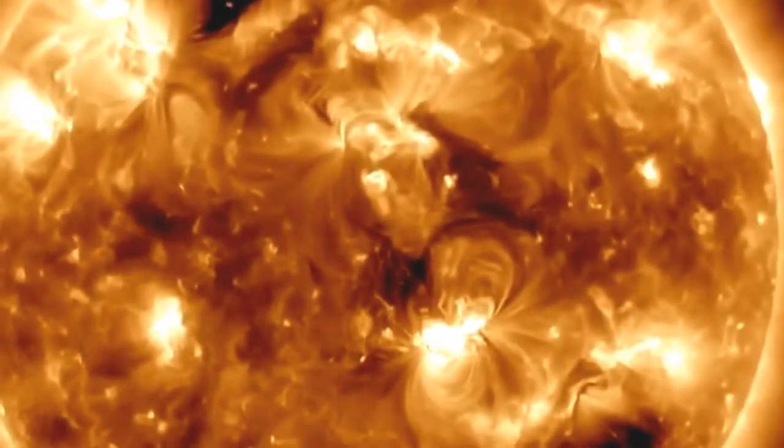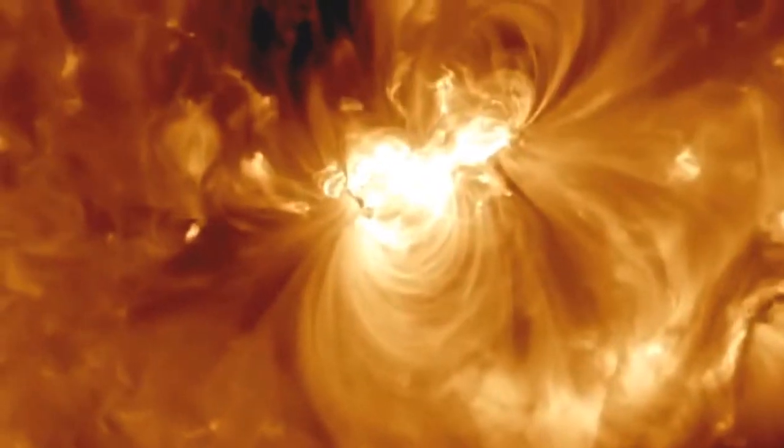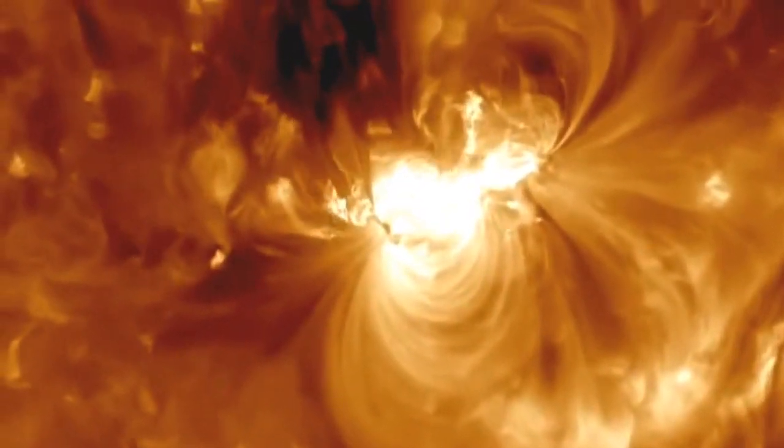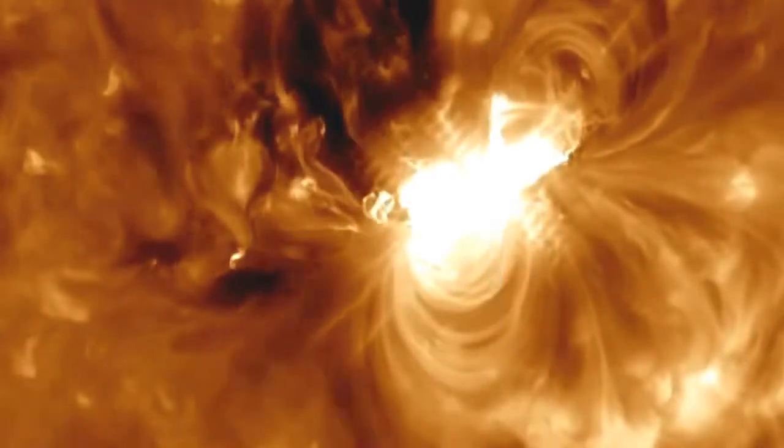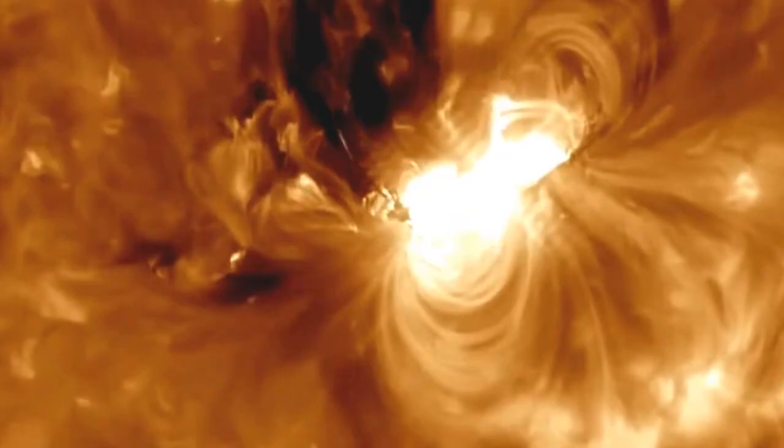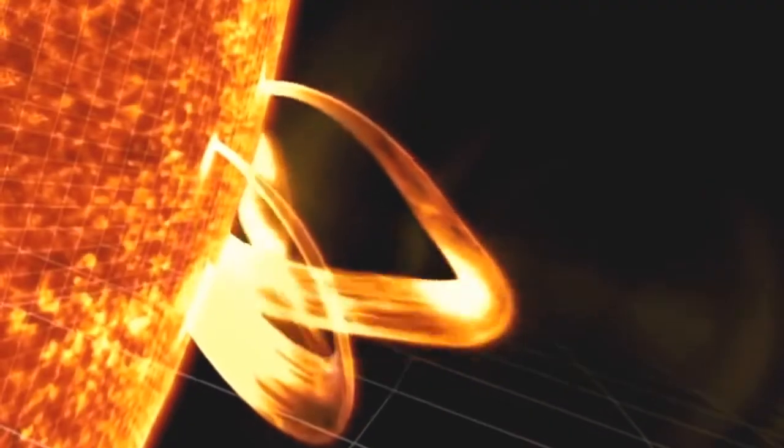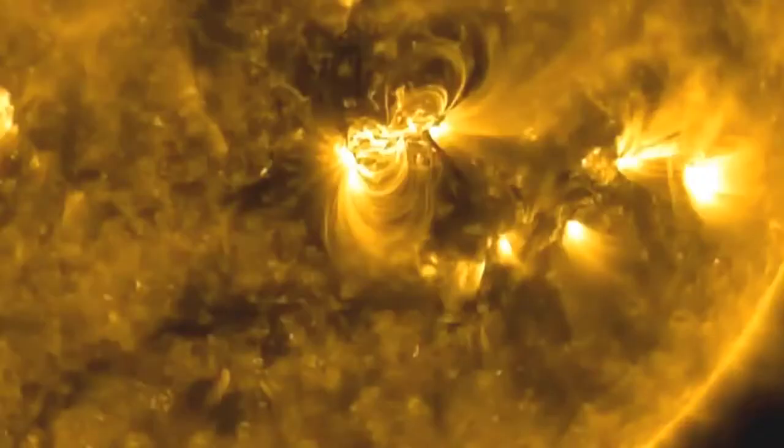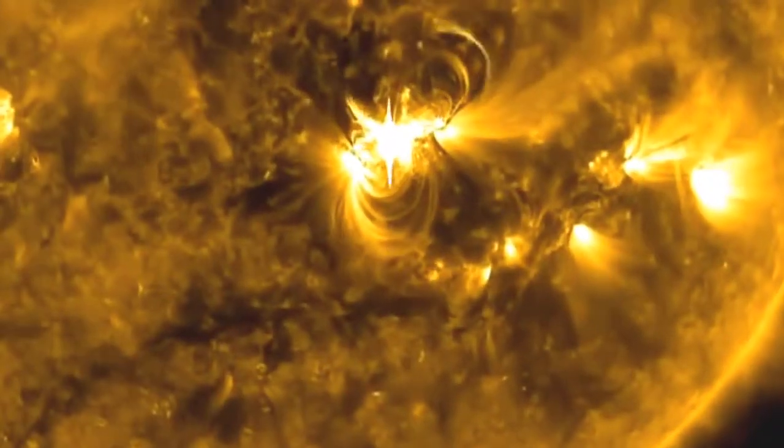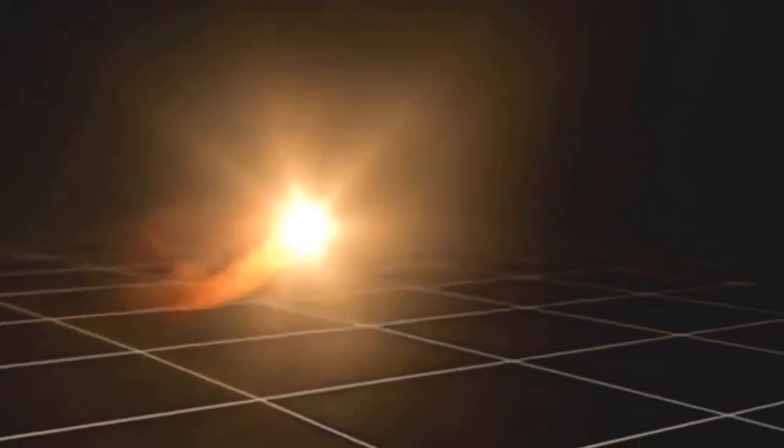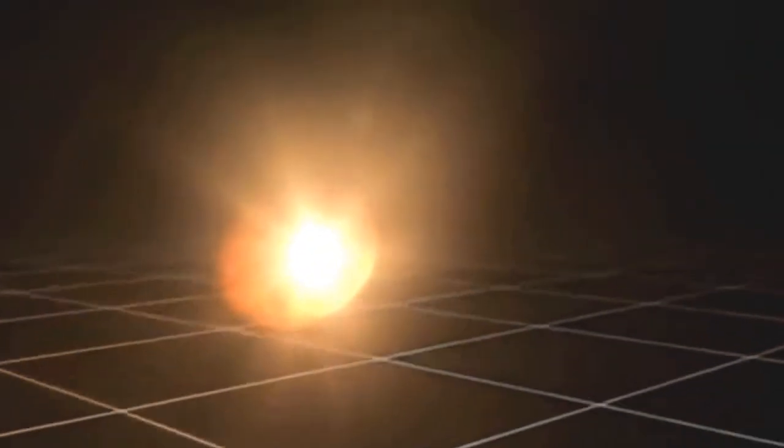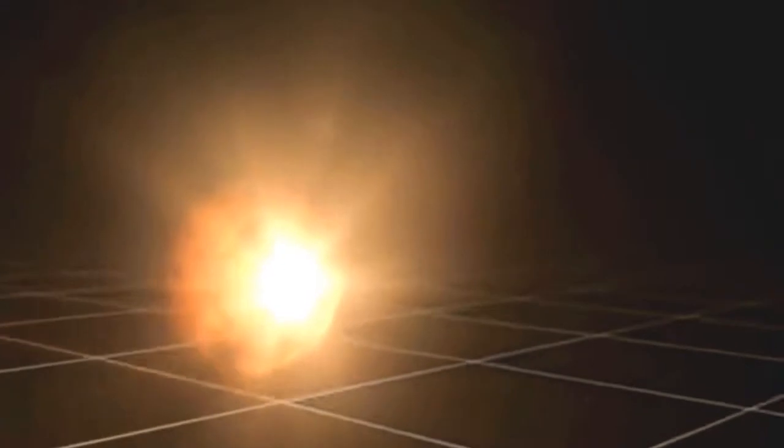The solar storm carries a one-two punch. First is a solar flare, releasing an outburst of X-rays that can reach Earth within minutes. The second, more ominous threat arrives a few days later.